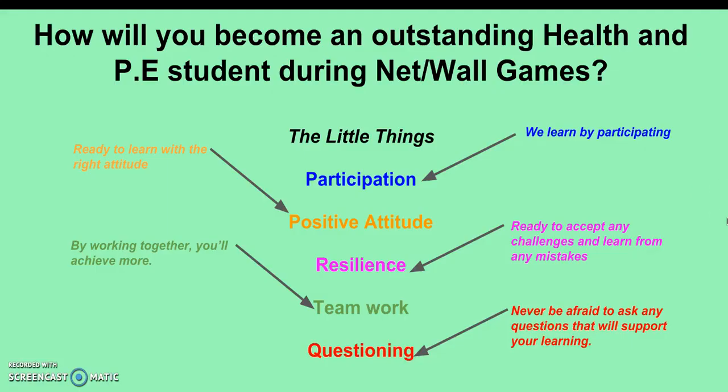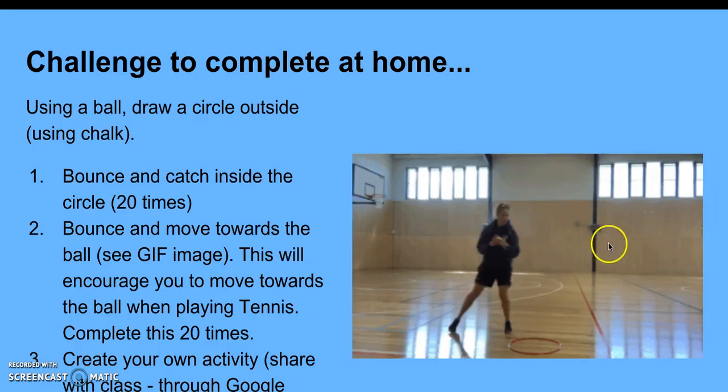How will you become an outstanding Health and PE student during net and wall games? Here are the five things we've been working on in term three: participation, positive attitude, resilience, teamwork, and questioning. We learn by participating, we come ready to learn with the right attitude, we accept challenges and learn from mistakes, we achieve more by working together, and we should never be afraid to ask questions that support our learning.